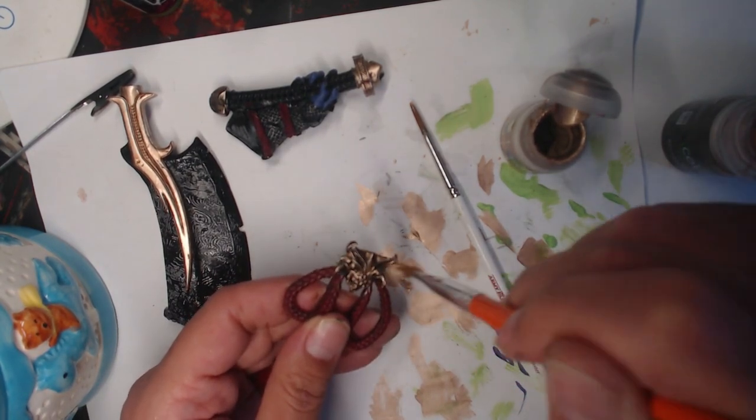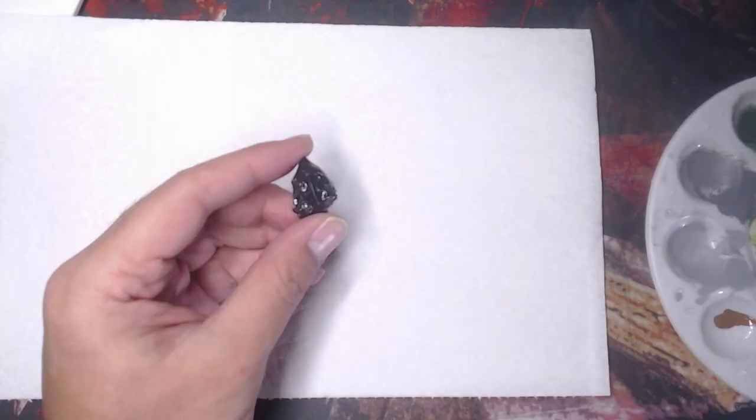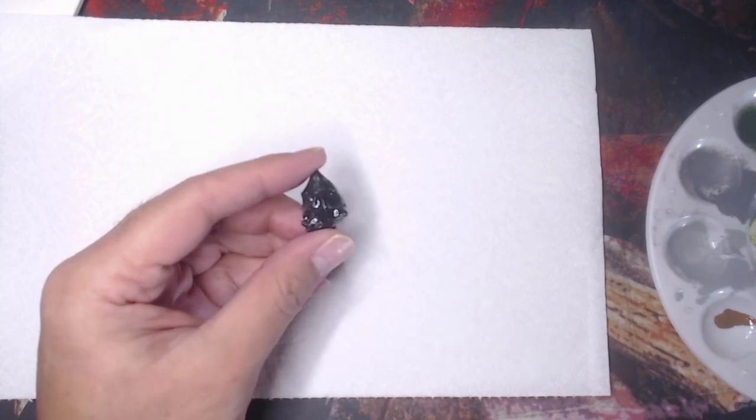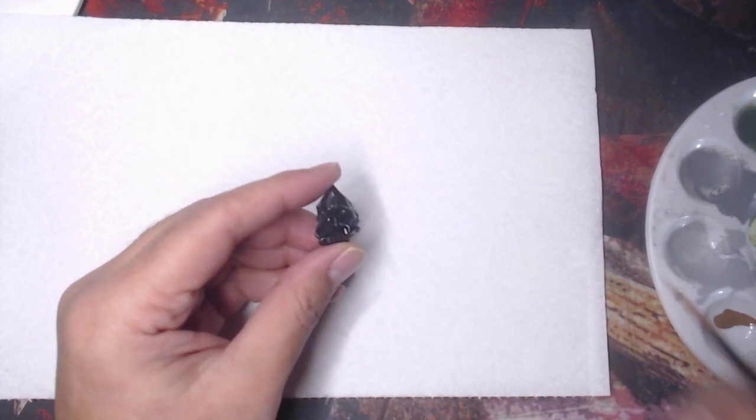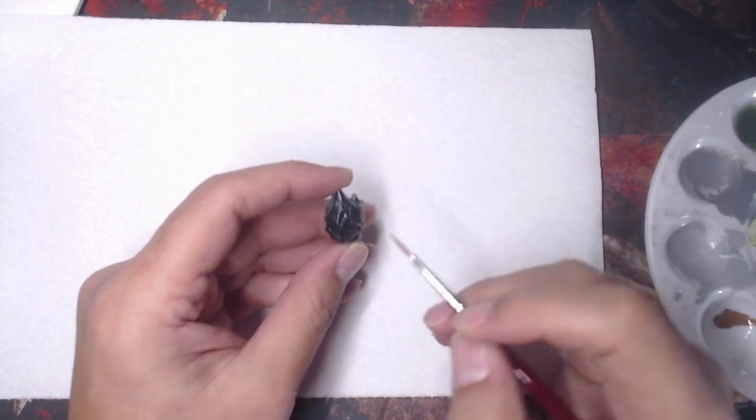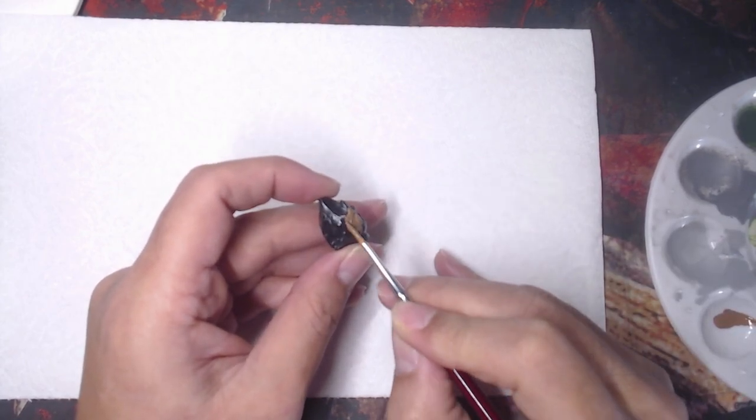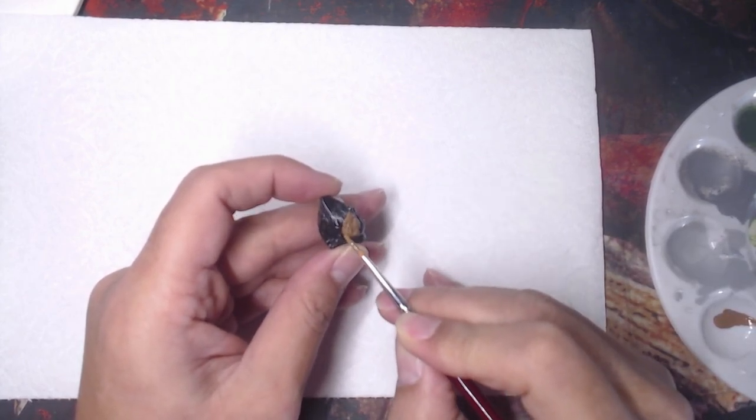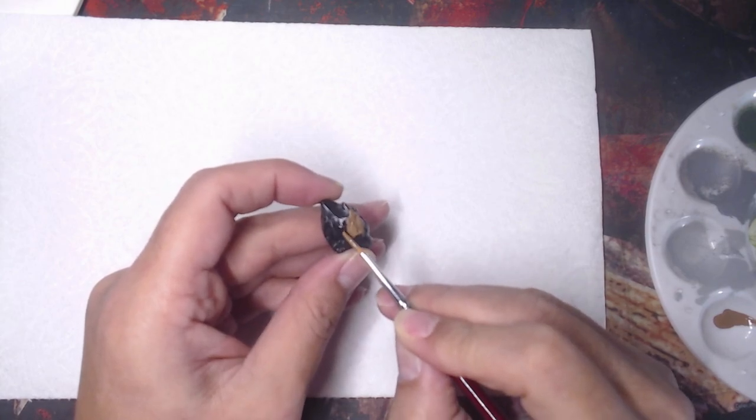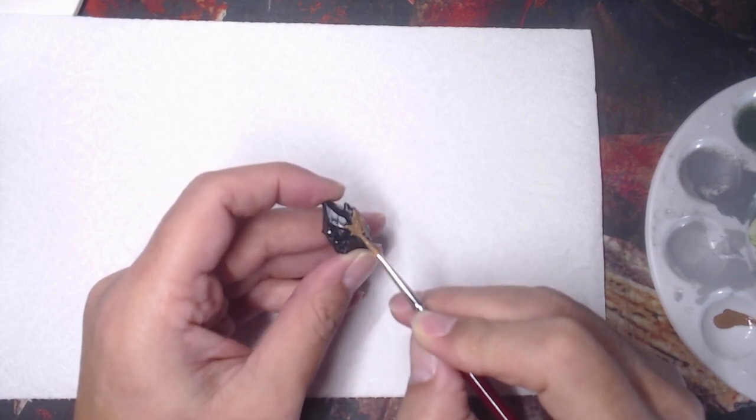Next up is the stone that Tengen holds. I wanted this to be a type of onyx or obsidian that may have been used in the making of the armor he's wearing. So, I wanted to leave most of this that shiny gloss black and I only painted the rocky part that is attached to the ore.